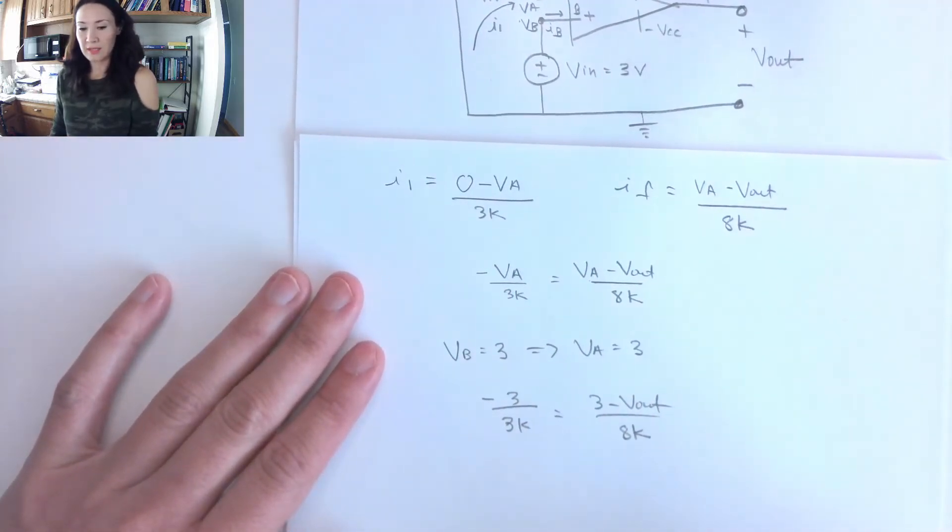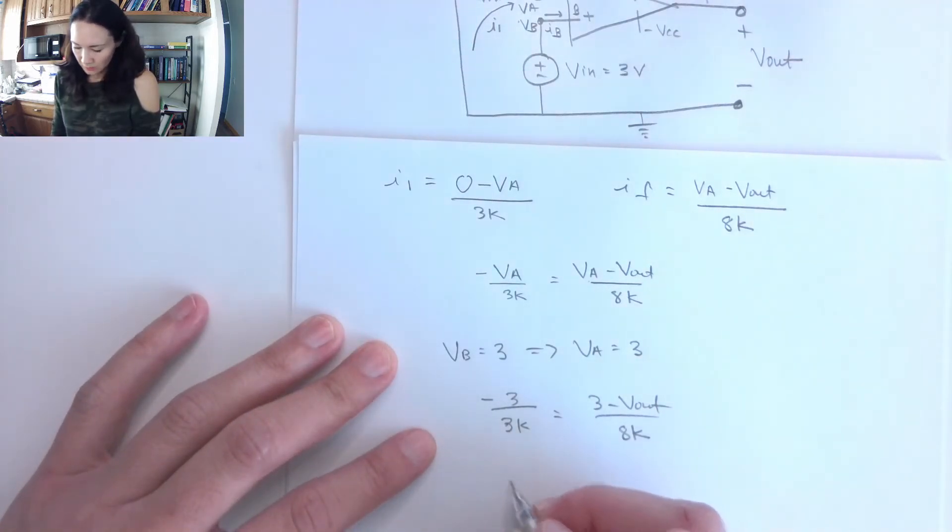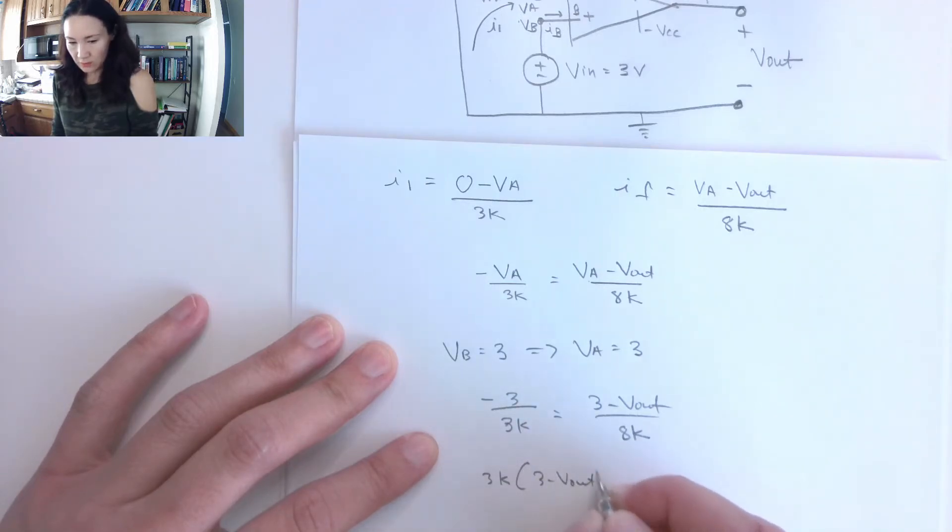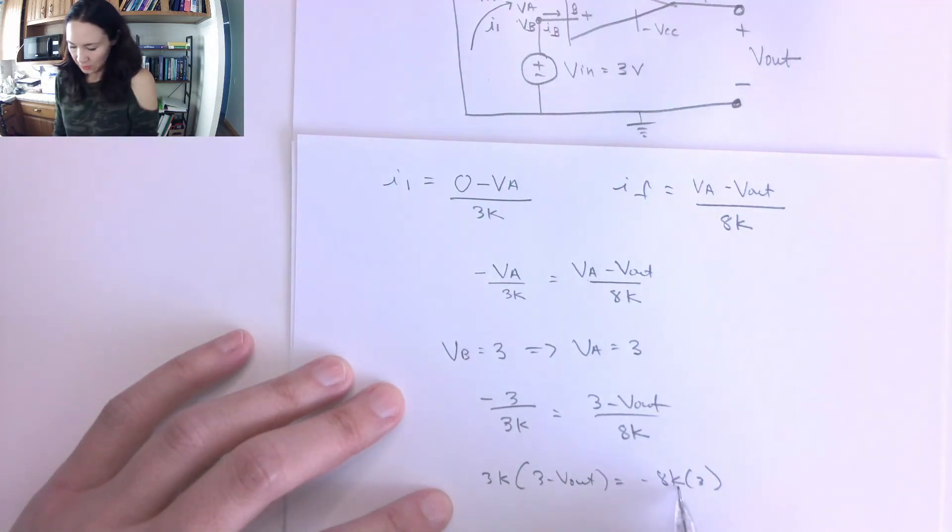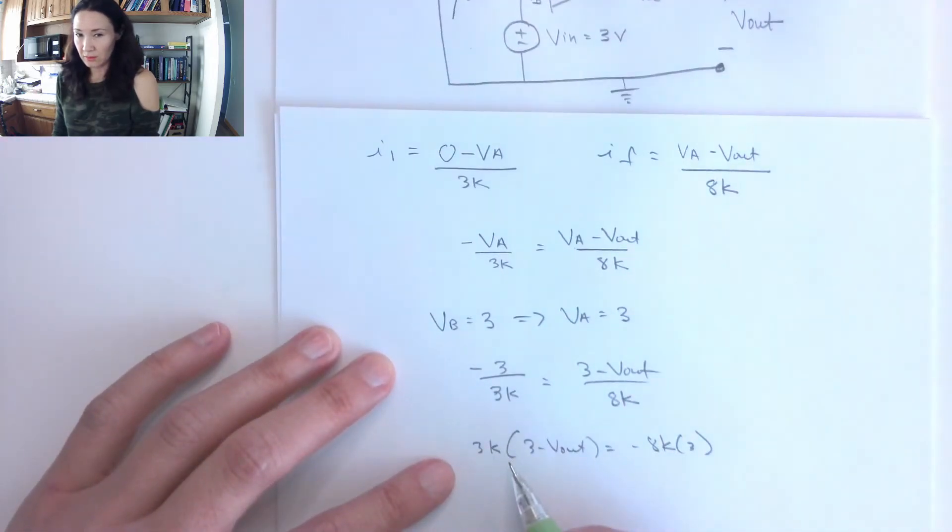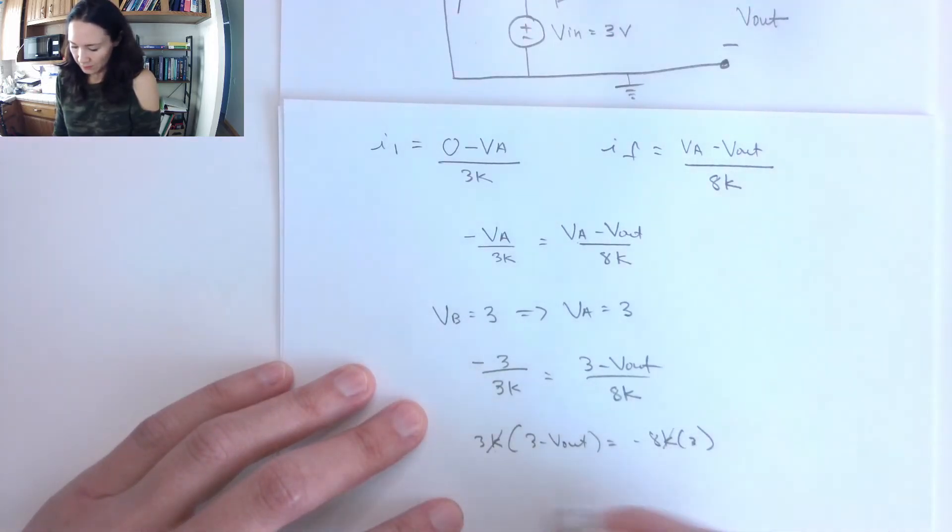This gives us negative 3 over 3K is equal to 3 minus Vout over 8K. And now all I have to do is use arithmetic to solve for Vout. So I can say that, let's say that 3K times 3 minus Vout is equal to negative 8K times 3. And then I can basically cancel out this K. I can sort of replace it with times 1,000, right? So if I have a K on both sides of the equal sign, I can just basically cancel those out. And then this gives me 3 times 3 minus Vout is equal to negative 8 times 3, which is negative 24.